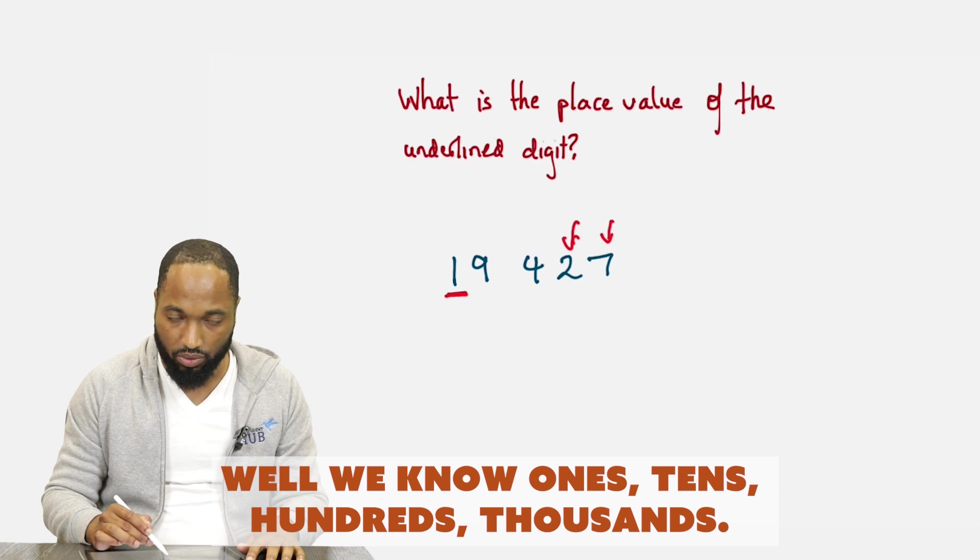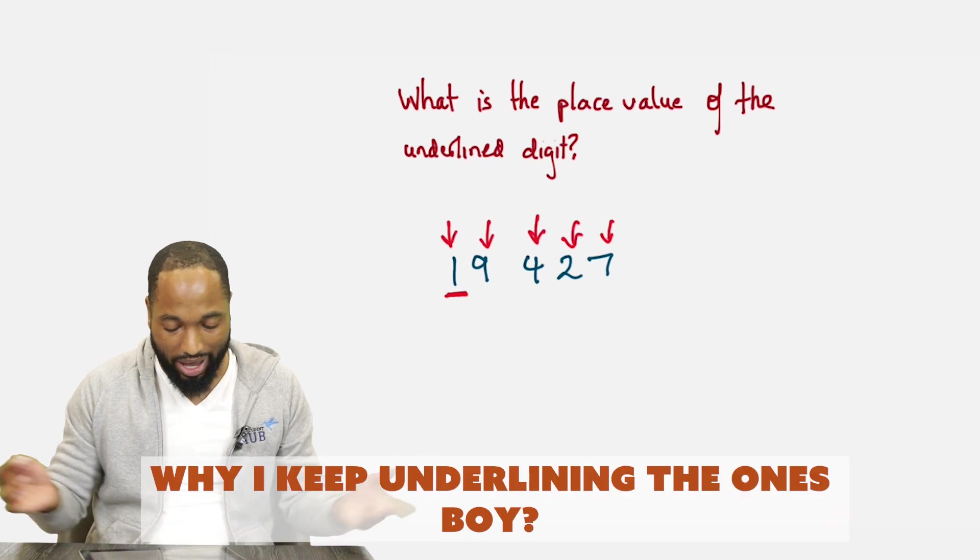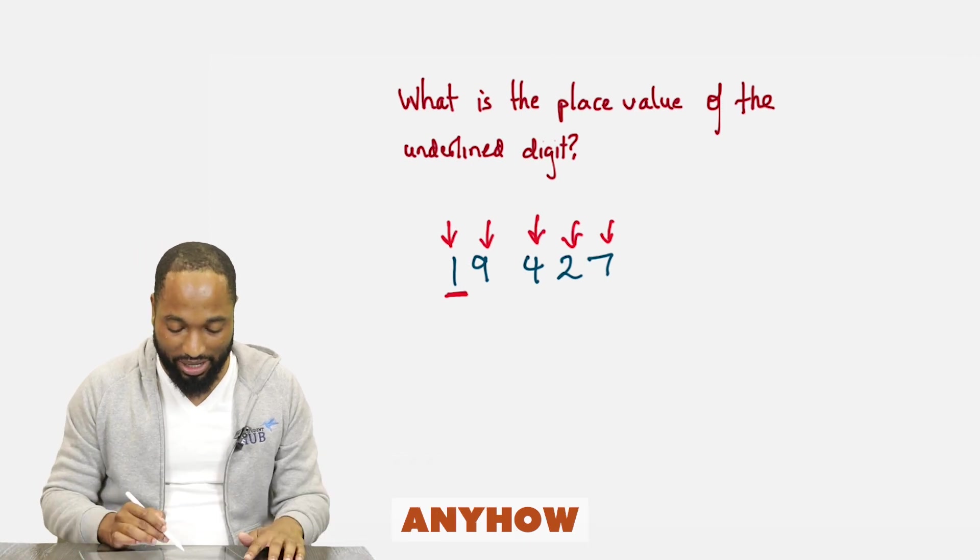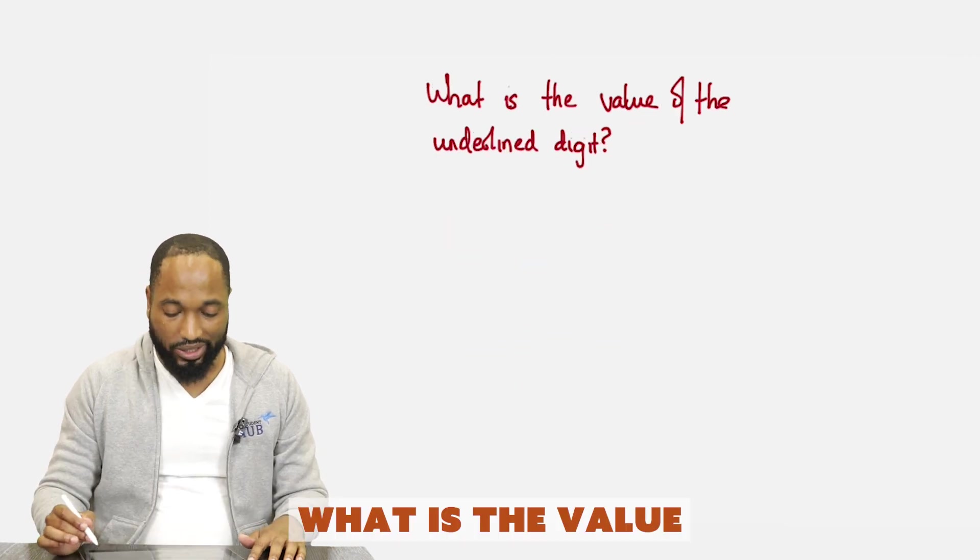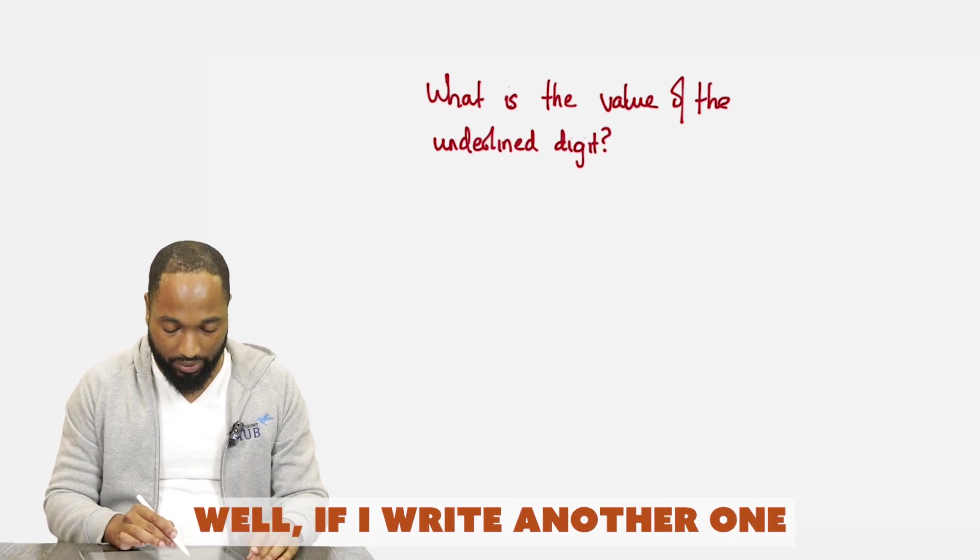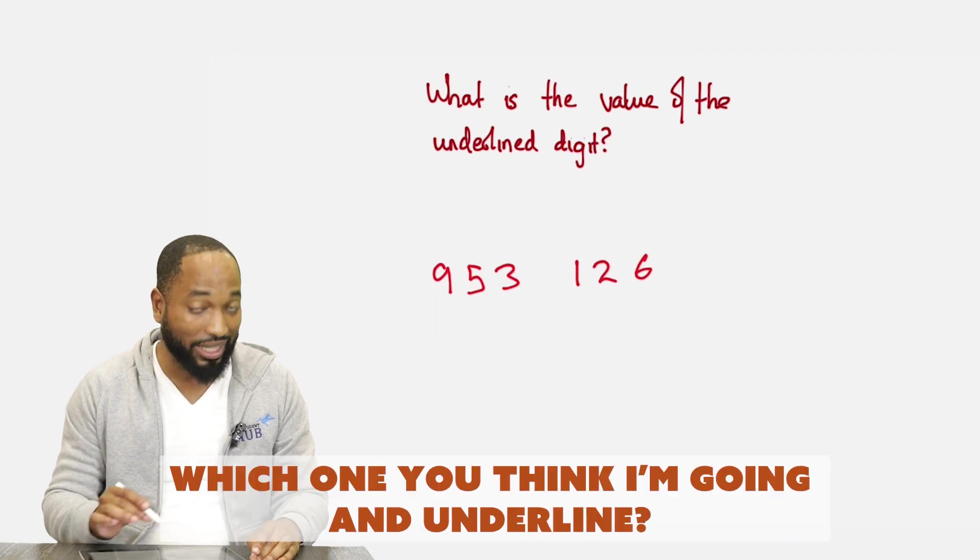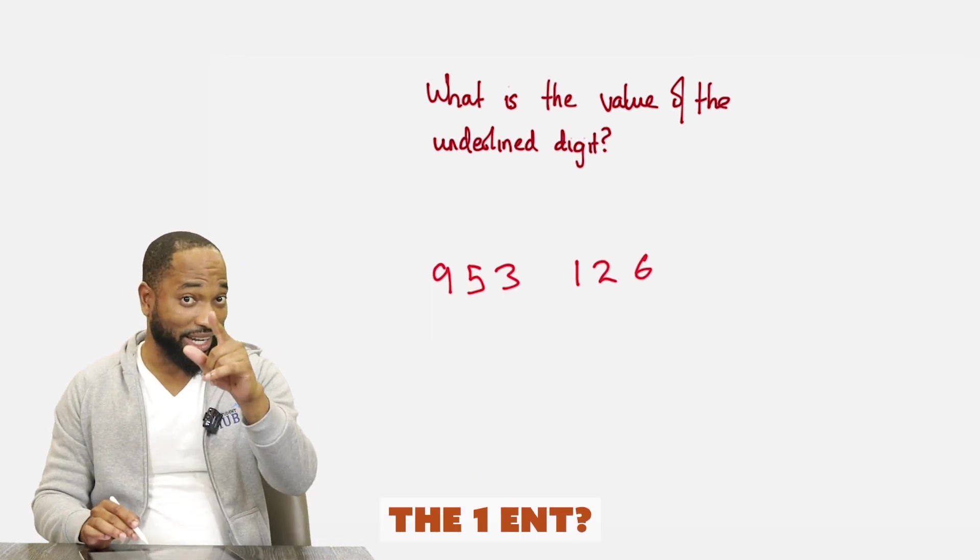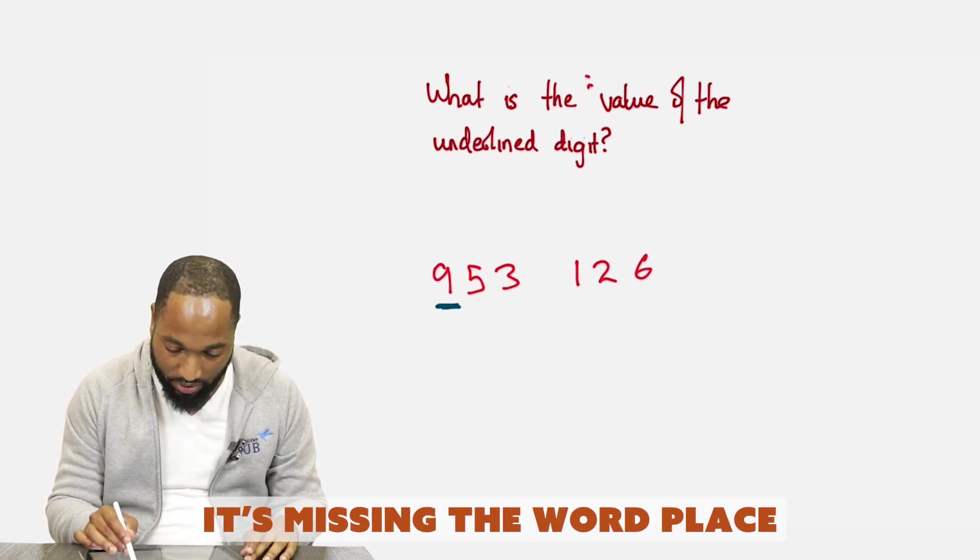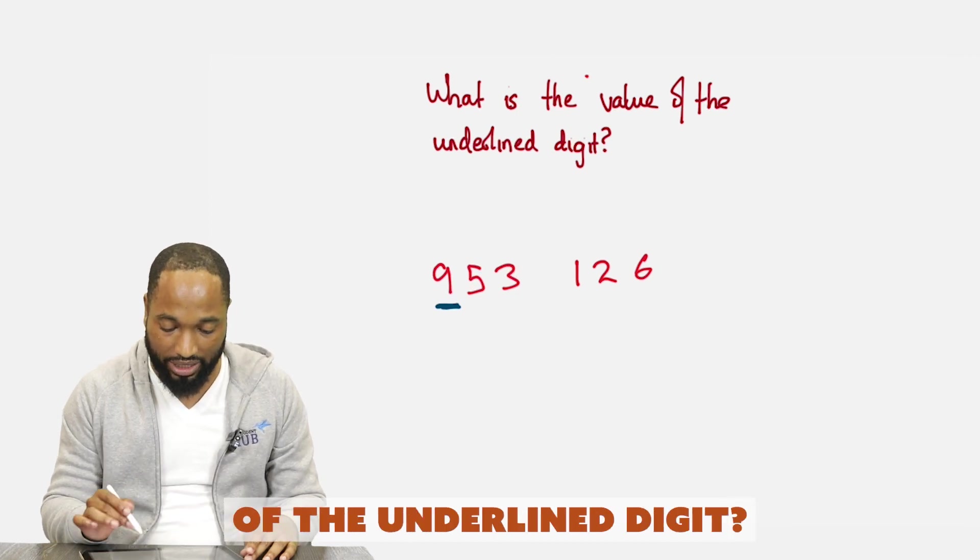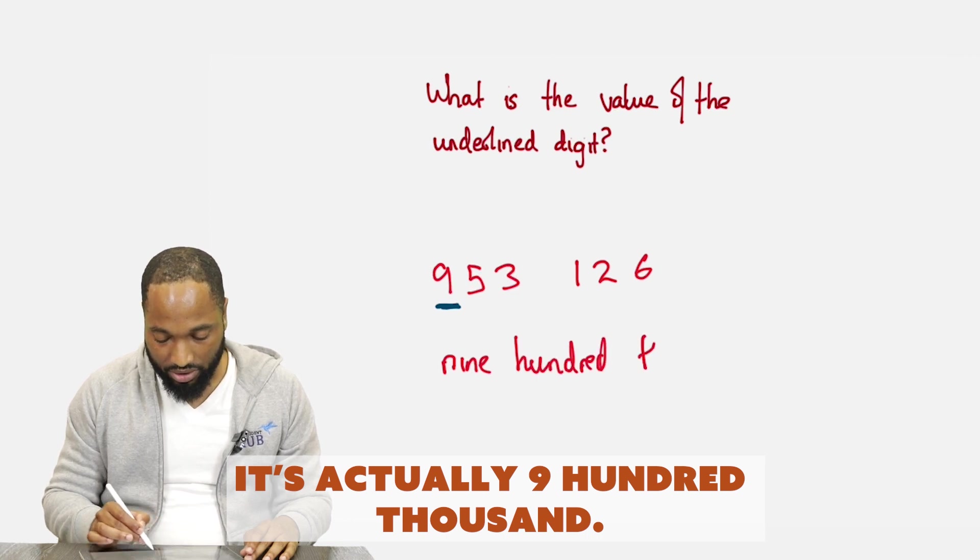What is the place value of that guy over there? Well, we know ones, tens, hundreds, thousands. This is tens of thousands. Why I keep underlining the ones? Anyhow, the place value is tens of thousands. What is the value of the underlying digit? Well, if I write another one. Nine, five, three, one, two, six. Which one you think I'm going to underline? No, I'm not going to underline the one. I'm going to underline the nine. What's the place value of the nine? There's no word place here. It's missing the word place. It's just value. So what is the value of the underlying digit? It's actually nine hundred thousand.